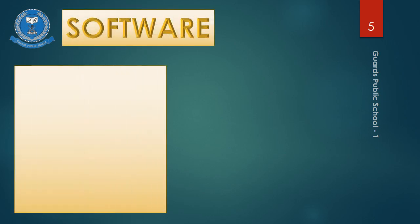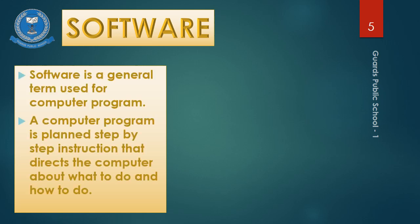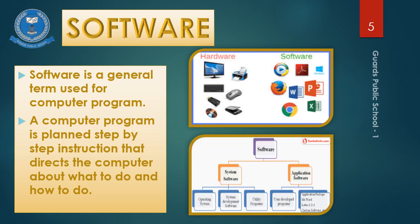Now moving on to software. Software is a general term used for computer programs. A computer program is a planned, step-by-step instruction that directs the computer about what to do and how to do it. Software is the program through which we can run the computer. With the help of software you are able to run your device and your system. Without software you are not able to do any work on the computer.